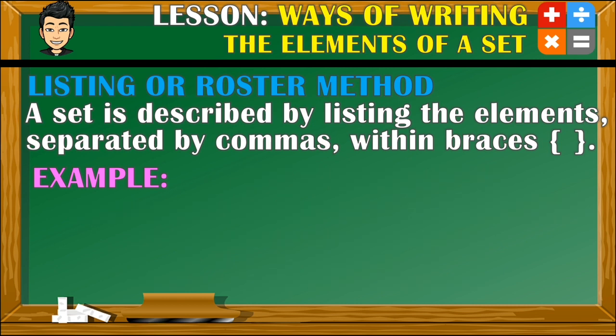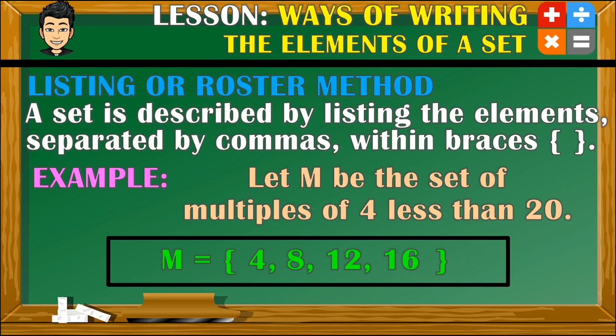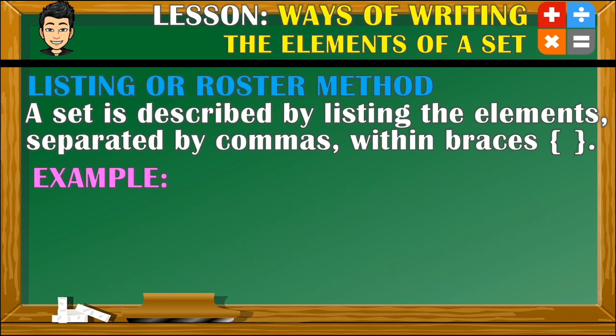Now let's have this one. Let M be the set of multiples of 4 less than 20. So similarly, the elements of set M will be listed down just like this.